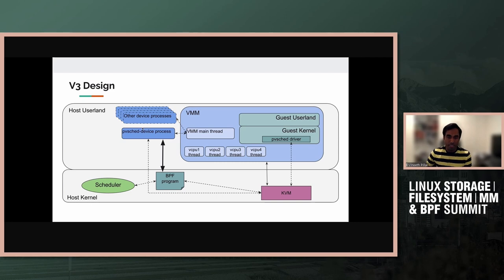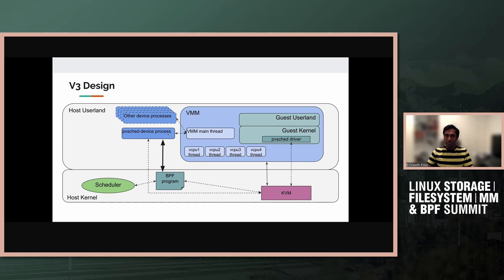In the v3 design, in the VMM we emulate a new virtual device called pvskate, which is responsible for doing the handshake with the guest. When the guest comes up, the device is probed, a pvskate driver gets loaded and talks to the device for the handshake, providing details like the shared memory page. The device process gets information about vCPU threads — PID, CPU, etc. — from the VMM itself. Once it has all the details, it loads a BPF program that acts as the decision maker and policy engine.